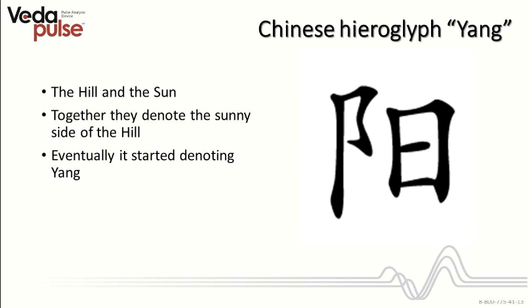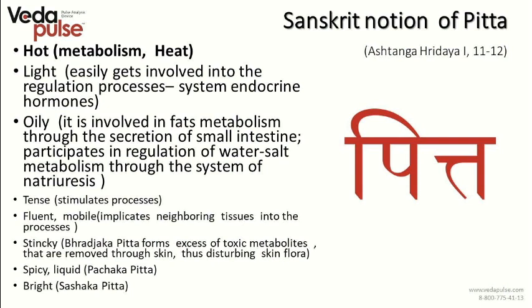The Chinese hieroglyph of Yang has two graphemes: the first is a hill and the other denotes the sun; together they mean the sunny side of the hill which is always being warmed up. According to Ashtanga Hridaya, the Sanskrit notion of Pitta is something that is hot, light, and easily gets involved in regulation processes. It is oily, involved in fat metabolism through secretion of the small intestine, and participates in regulation of water-salt metabolism. Pitta is dense, stimulates processes, is fluent and mobile, and implicates neighboring tissues into the processes. It is also stinky, spicy, liquid, and bright.